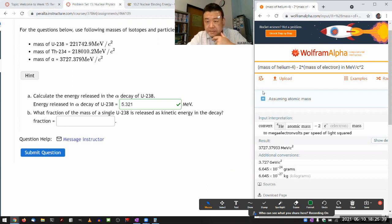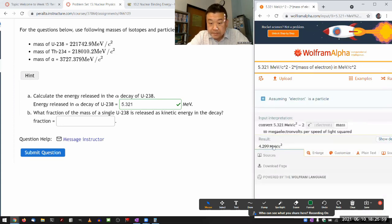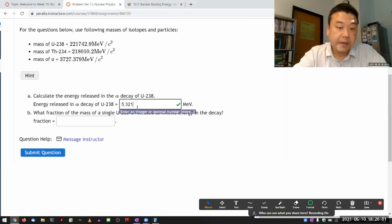So let me see what happens if I take this and subtract twice. So 5.321 MeV per C squared minus twice the mass of electron, and see if this 4.3 will get accepted as correct.